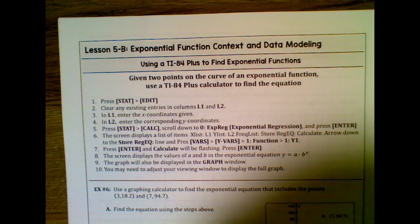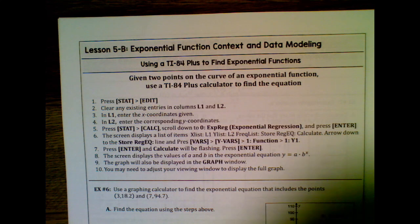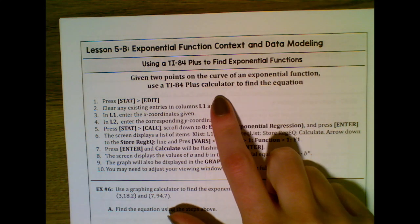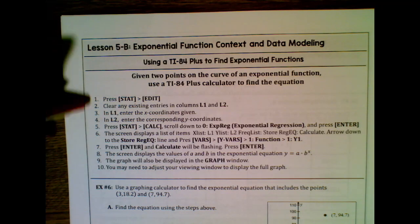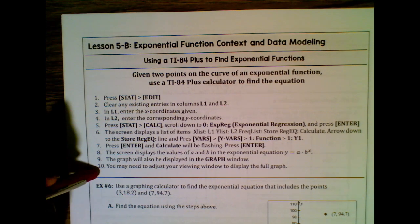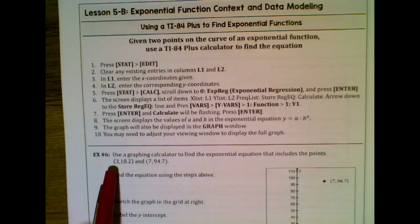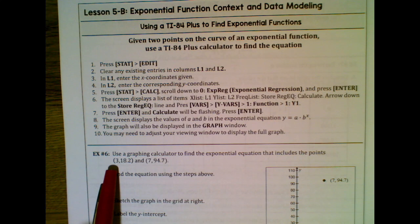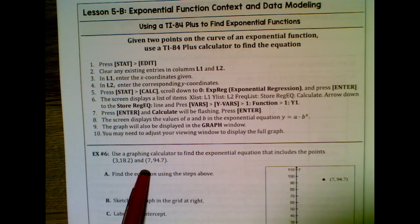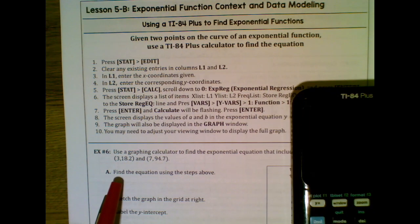Today we are going to talk about exponential function context and data modeling. Given two points on the curve of an exponential function, we're going to use the TI-84 Plus calculator to find the equation. Here are the steps listed for how to type this into the calculator and find the equation. Number six says: using a graphing calculator, find the exponential function equation that includes the points (3, 18.2) and (7, 94.7).